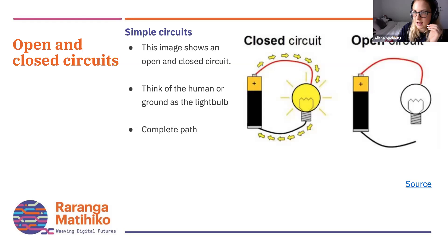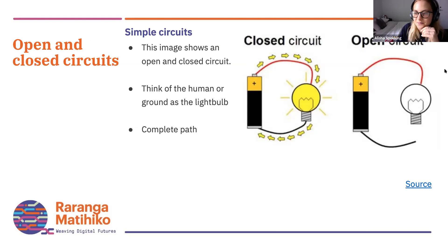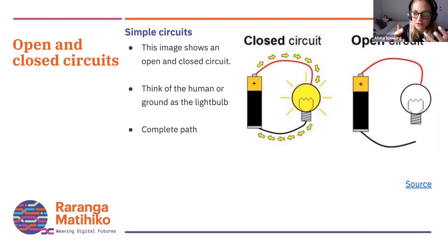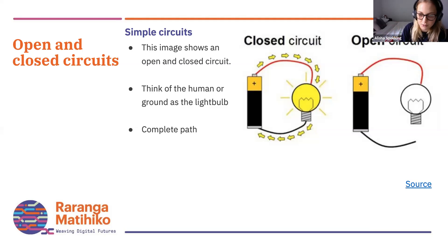Here's an example of an open and closed circuit. I like to think of it like doors: if the door is open, the current can get through; if it's closed, it can't. We actually want that closed circuit — we want things to circulate through and remain that way. Think of the human holding the ground as the light bulb in this situation: we're helping that current go through. If we aren't holding it, nothing is going to work — we need that complete path.